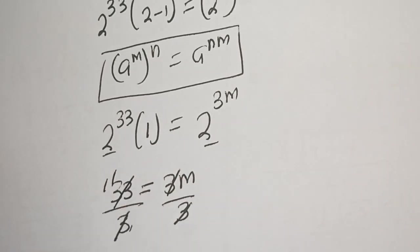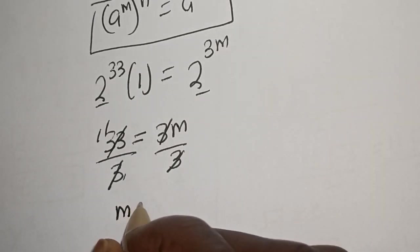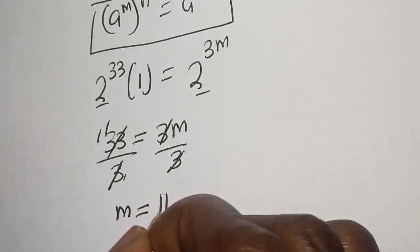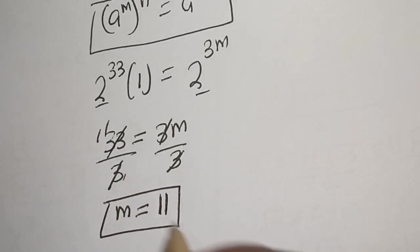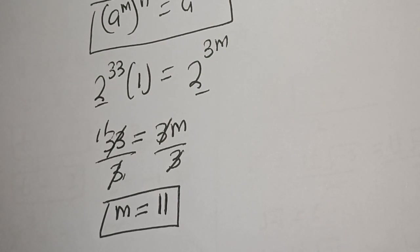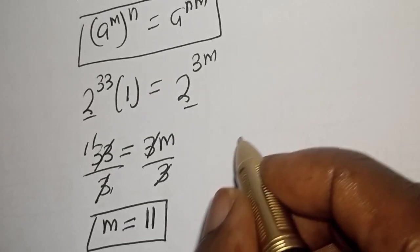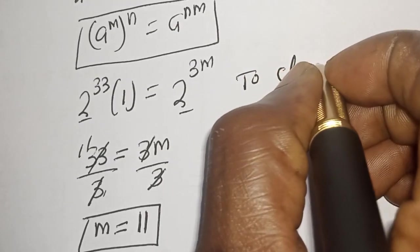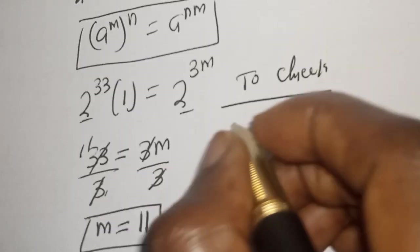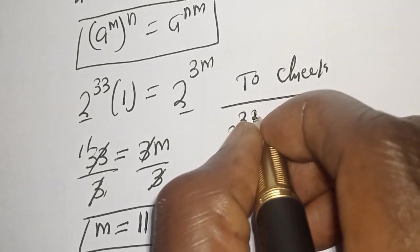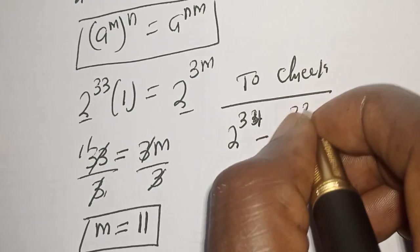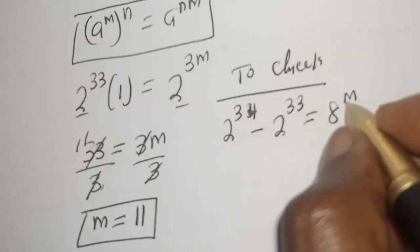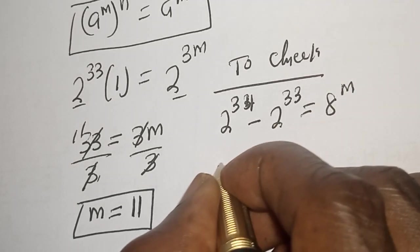So m is equal to 11, and this is the final answer. Let's check to confirm if our answer is right or wrong. We have the given equation: 2 raised to power 34 minus 2 raised to power 33 is equal to 8 raised to power m, and we know that m is equal to 11.